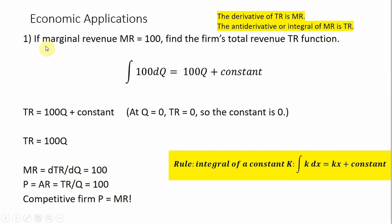So example one: we're going to have a firm that has a marginal revenue constant at $100, so marginal revenue equals $100. We want to find the firm's total revenue function. One thing to note here is that the derivative of total revenue is marginal revenue. The process of integration is just the opposite — it can be viewed as the antiderivative. So the antiderivative or the integral of marginal revenue will get back the original function, which is total revenue.